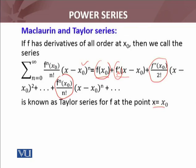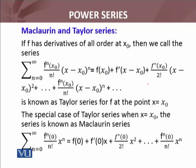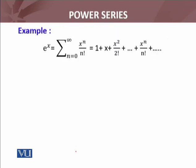Now what is the McLaurin series? If x naught equals 0, then we call it the McLaurin series — the special case of the Taylor series when x naught equals 0. The series is known as the McLaurin series, and its expression is as follows. Let me give you some of the series of well-known functions.